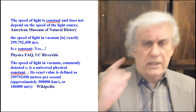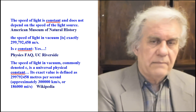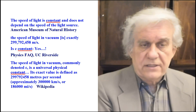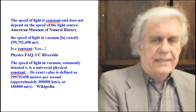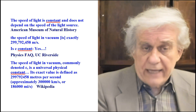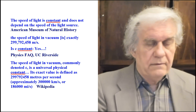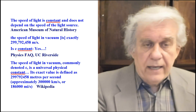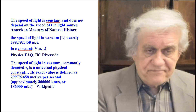Another source, physics fact Riverside, states the speed of light in vacuum is exactly 300,000 kilometers per second. Is c a constant? Yes — no doubt about it in their minds. The speed of light in a vacuum, commonly denoted c, is a universal physical constant. So little c is a constant; the speed and velocity of light in outer space in the vacuum is a constant at about 299,000-something kilometers per second.